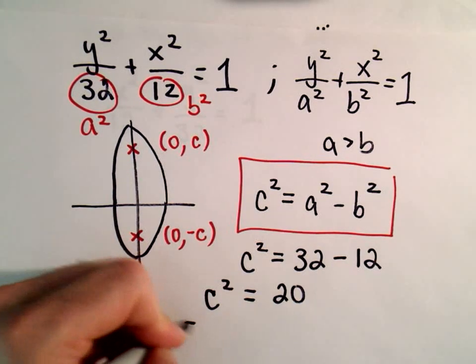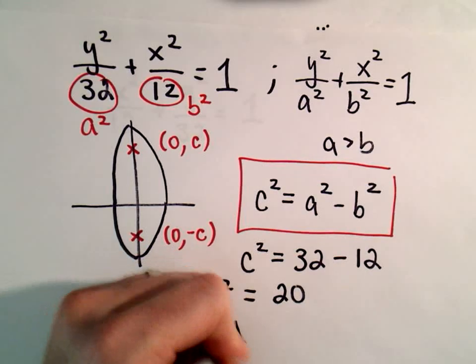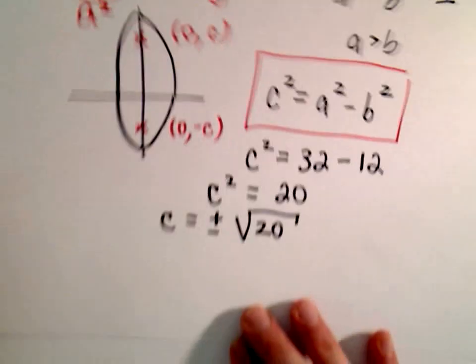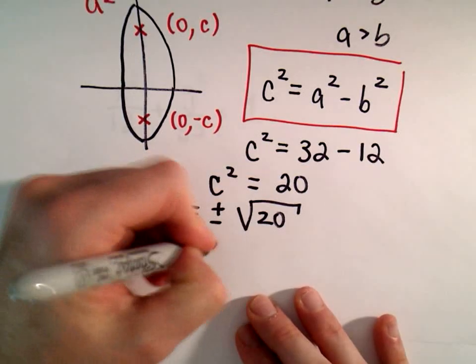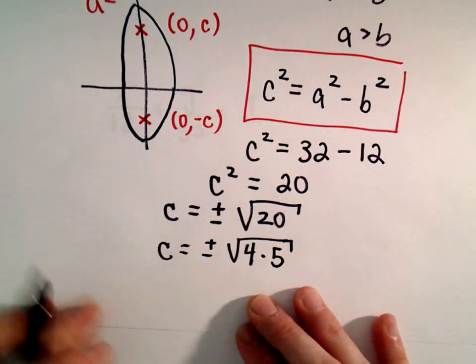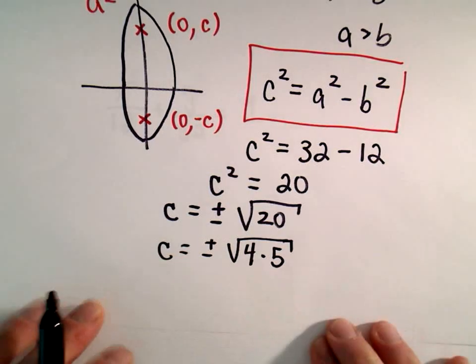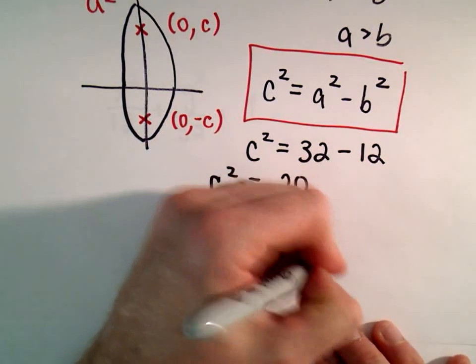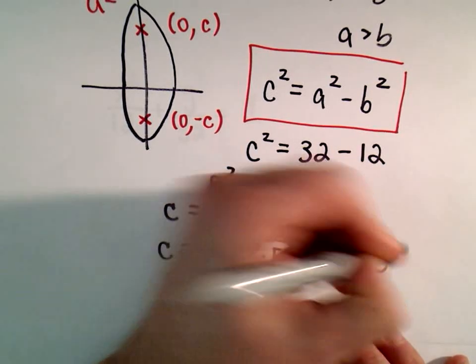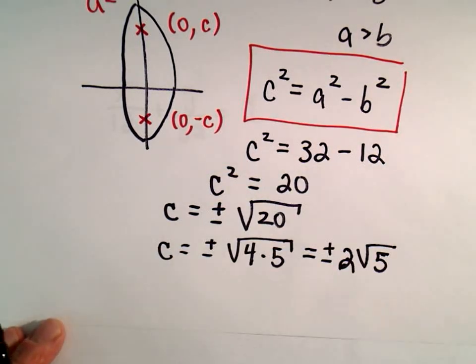We can take the square root of both sides. We'll have to include positive and negative, so we're taking the square root of 20. We can write √20 as √(4×5). The square root of 4 equals 2. We can't do much with √5, so we'll leave that as 2√5.